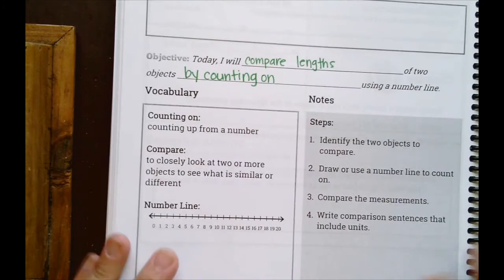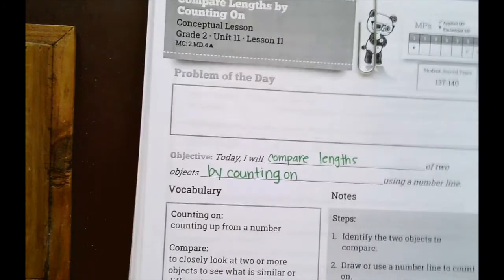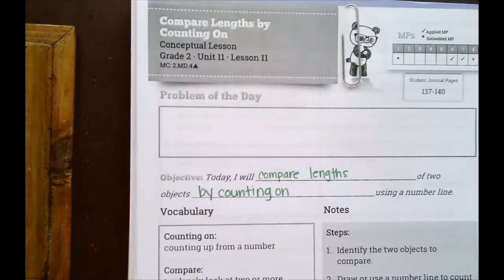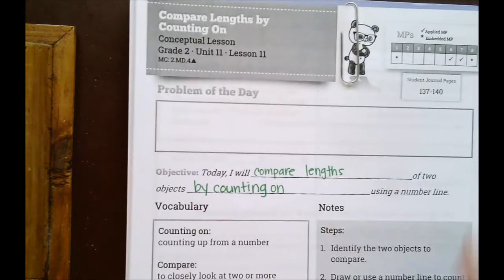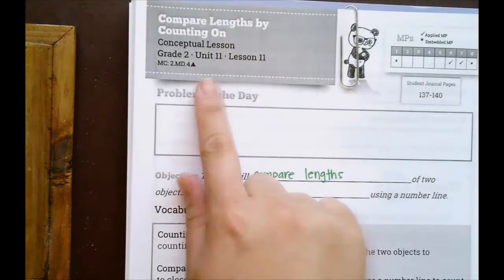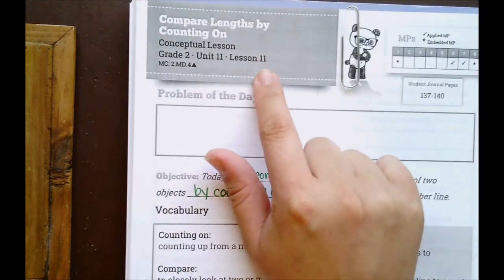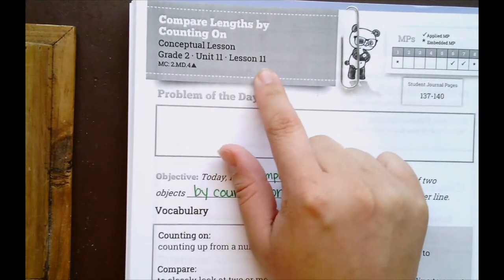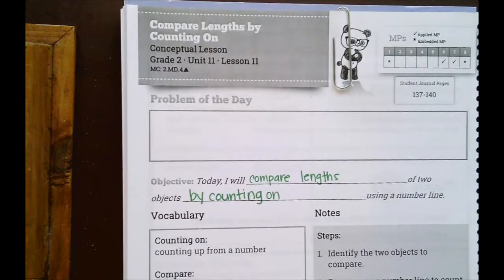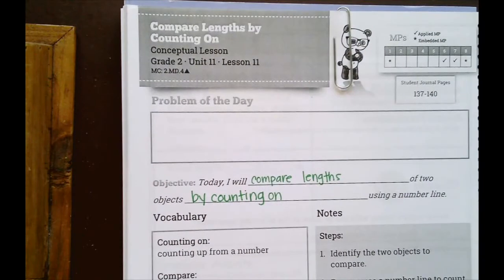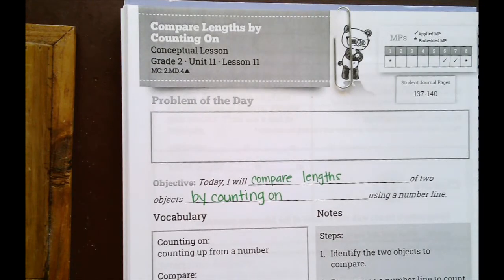All right, so today for our math lesson, we are actually combining two of our lessons. You need Lesson 11. Lesson 11 is what we're starting with, and then we're going to continue on to do part of Lesson 12, because they're the same concepts and they're the same objectives.